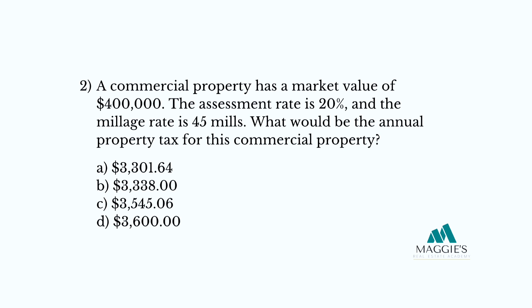Step 1: convert the percent into a decimal — remember to divide by 100. The assessment rate is 20%, so 20 divided by 100 equals 0.20. Step 2: determine the assessment value. Multiply the market value times the assessment rate. $400,000 times 0.20 gives us $80,000.